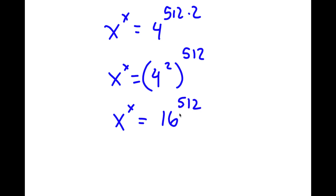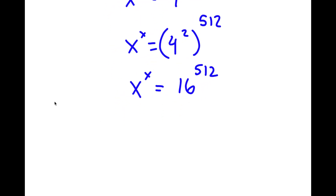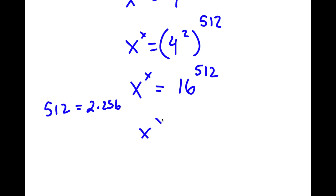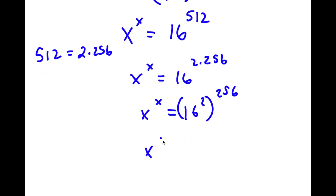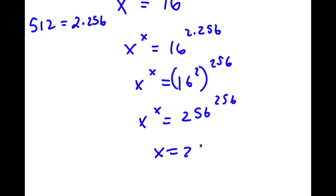Now I'm going to repeat the same thing again. 512 is equal to 2 times 256. So now I have x to the power of x is equal to 16 to the power of 2 times 256, which is the same thing as 16 squared to the power of 256, which is the same thing as 256 to the power of 256, meaning x is equal to 256.